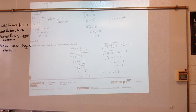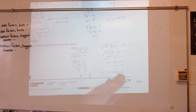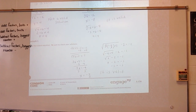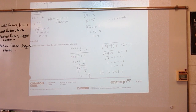What was the first step we took? We isolated the radical — we got rid of that negative 2. The second step was we eliminated the radical altogether by squaring both sides. The purpose of that was to eliminate the radical so that we just have a regular equation to solve.